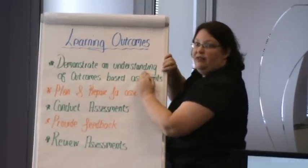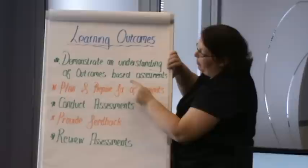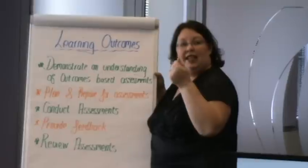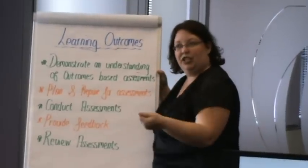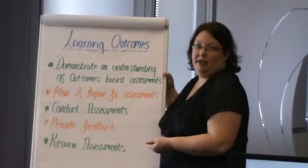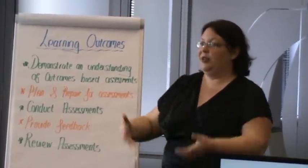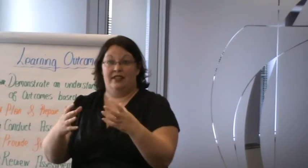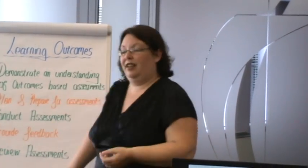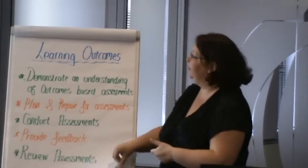The first learning outcome is very much around knowledge, while the other four are around skill — it's an application that you need to do, and that is done in a very structured manner. So instead of just running along and doing it, we've put together an assessment process that allows you to go through a structured means of gathering evidence.